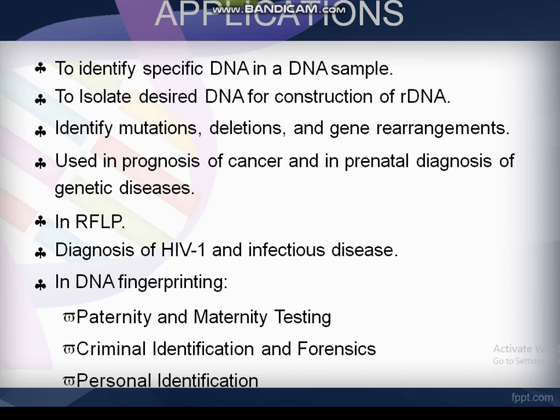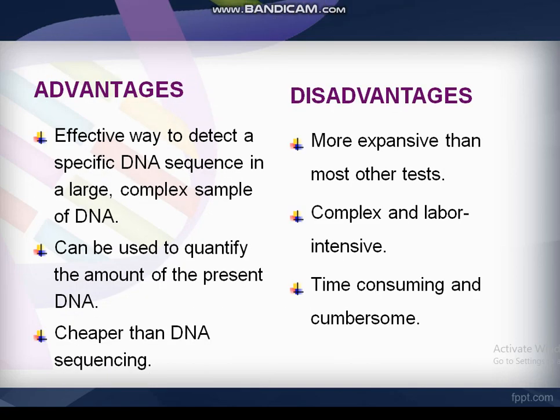Applications of southern blotting technique: it is used to identify specific DNA in a DNA sample, to isolate desired DNA for construction of recombinant DNA, to identify mutations, deletions, and gene rearrangements, used in prognosis of cancer and in prenatal diagnosis of genetic disease, diagnosis of HIV-1 and infectious diseases, used in DNA fingerprinting. In a large complex sample of DNA, it can be used to quantify the amount of DNA present.